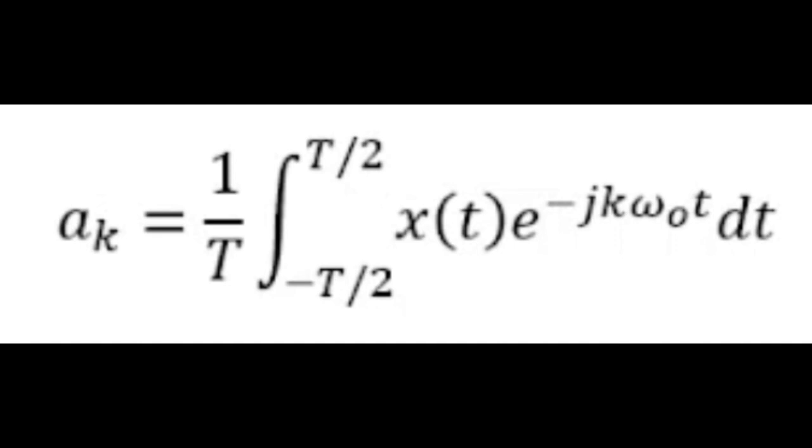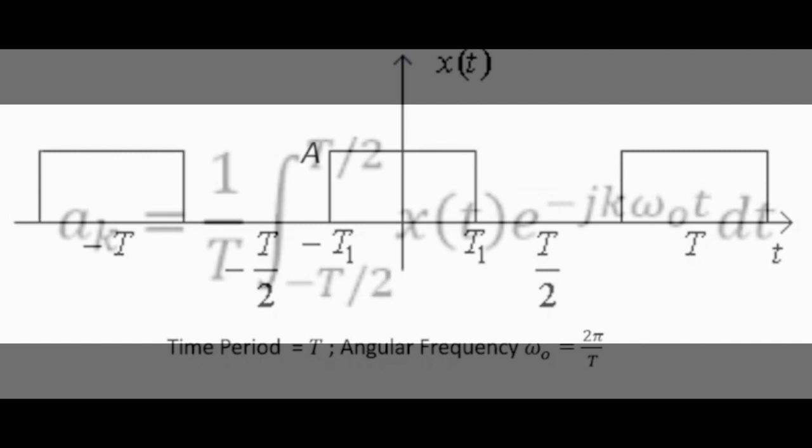Since the integral only appears from -T to T, we can simplify the integral as such.